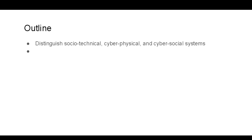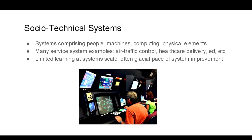The outline of this talk is as follows. First, I'm going to try to distinguish socio-technical, cyber-physical, and cyber-social systems to give you a framing for that latter term. Next, I'll talk about some of the key elements of cyber-social systems. And finally, I'll go through some of the emerging ideas that have come out of this series of workshops. Socio-technical systems is a topic that's been studied for decades.